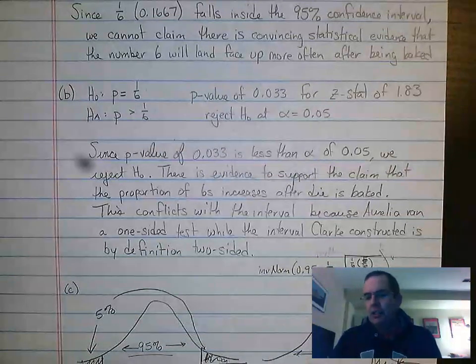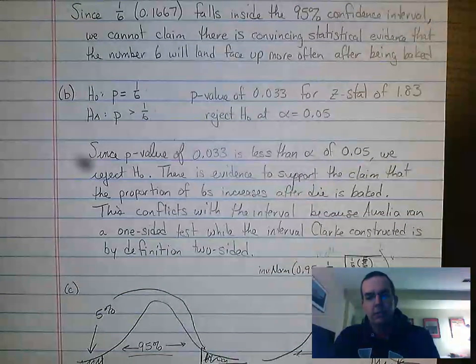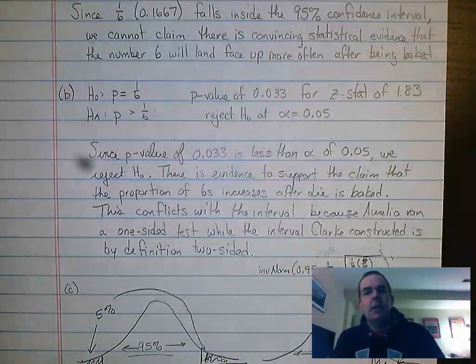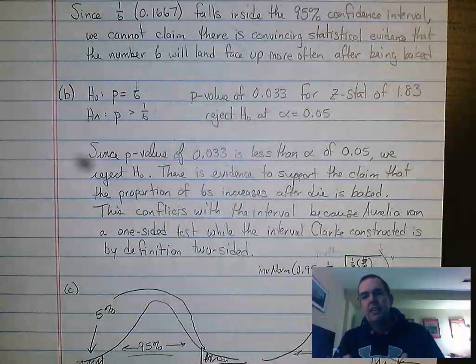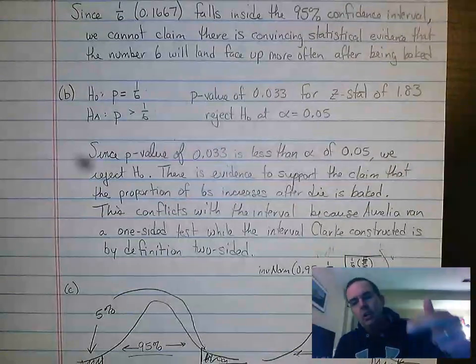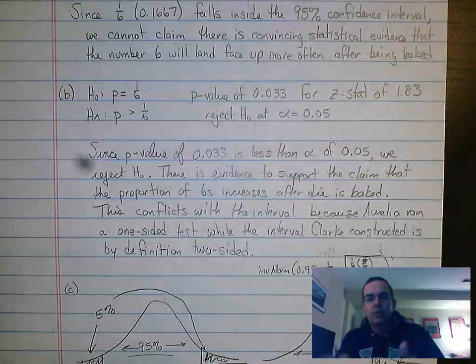And the question asked specifically, how does this mesh with what the student did in part A? And in this case, it conflicts with it. That's all it asked. It didn't really ask any detail. But the reason that it conflicts with it is Clark's confidence interval was two-sided.